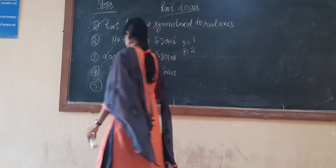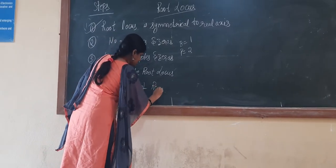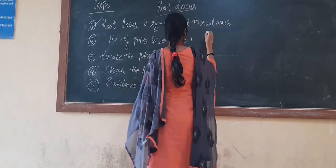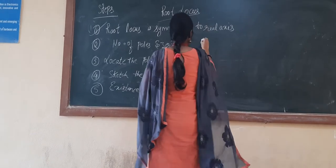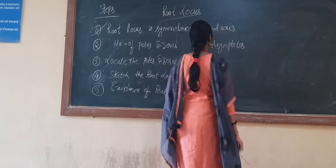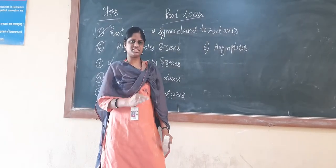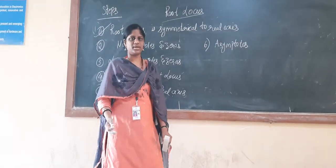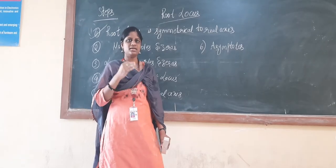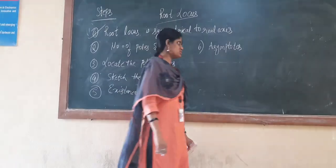The fifth step is that the root locus must exist on the real axis. The sixth step involves finding the asymptotes. An asymptote guides the root locus — it indicates from which point and in which direction the root locus path should be drawn. Asymptotes are straight lines drawn on the s-plane to guide the root locus.